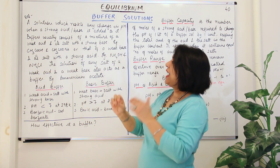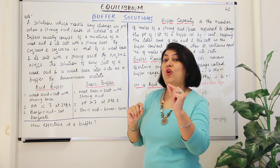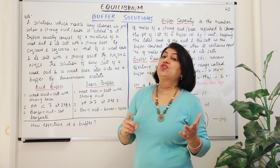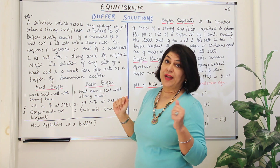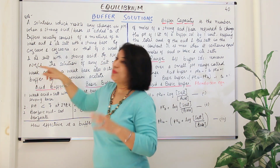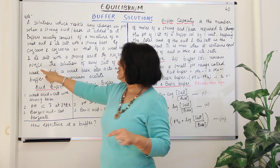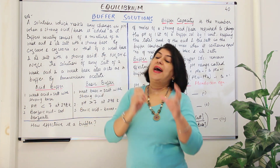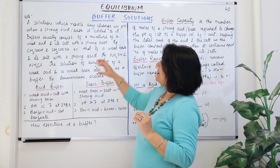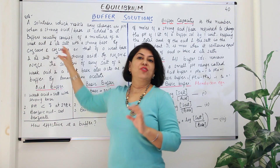On the other hand, you could have a weak base. For example, ammonium hydroxide is the weak base, and its salt with a strong acid — if you react ammonium hydroxide with hydrochloric acid, it results in the formation of ammonium chloride. So a mixture of a weak base with its salt with a strong acid would also act as a buffer, and this would be known as a basic buffer. Buffers can be acidic or basic depending on whether you took a weak acid or a weak base.